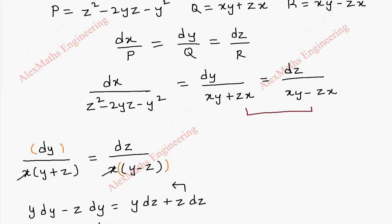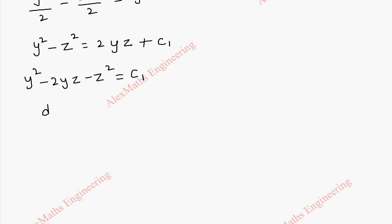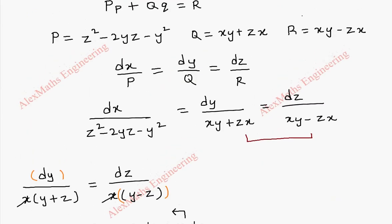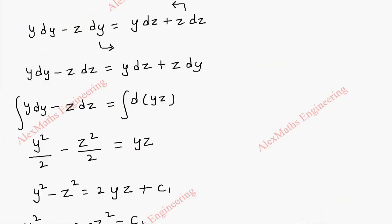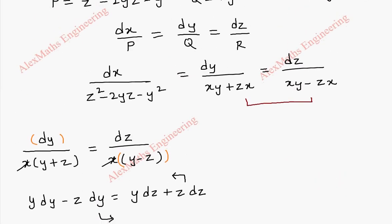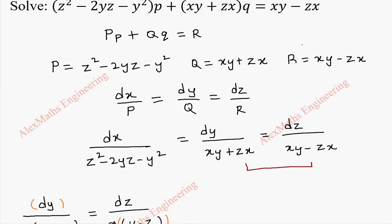Now we are going to use Lagrange's multiplier method, taking two terms at a time. Let us write the full equation again: dx by (z squared minus 2yz minus y squared) equals dy by (xy plus zx) equals dz by (xy minus zx).